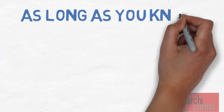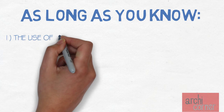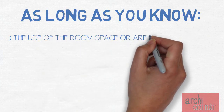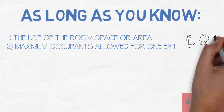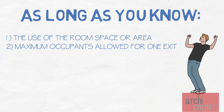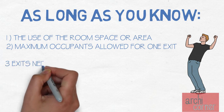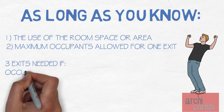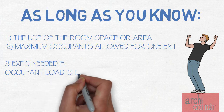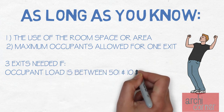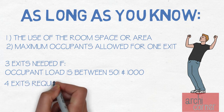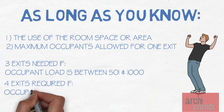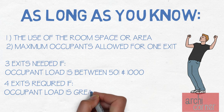It really is that simple. As long as you know what the room, area, or space is being used for and what the maximum occupant load for one exit is, then you're all set. Also, for your information: three exits or exit access doorways are required in any space with an occupant load of 501 to 1000, and four exits or exit access doorways are required in any space with an occupant load greater than 1000.